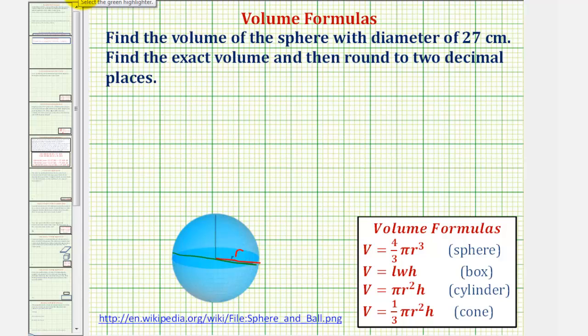And looking at our volume formulas, here's the volume formula for a sphere. Volume is equal to four-thirds pi r cubed. So to begin, let's find the radius.